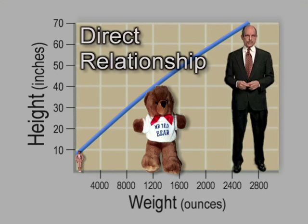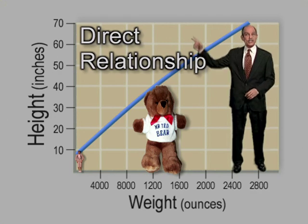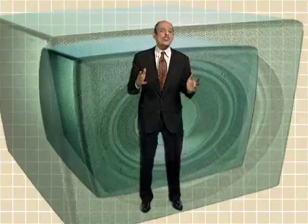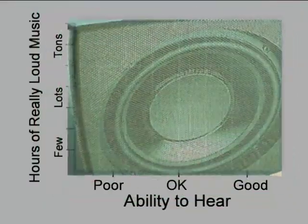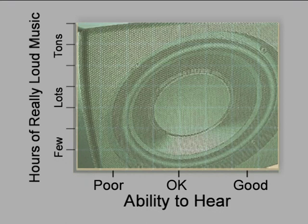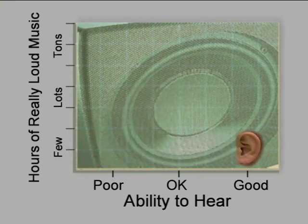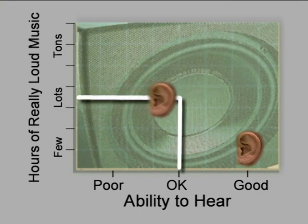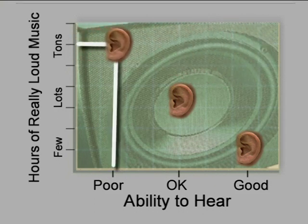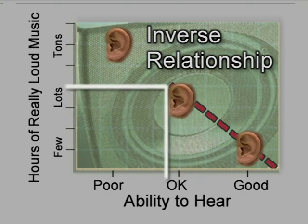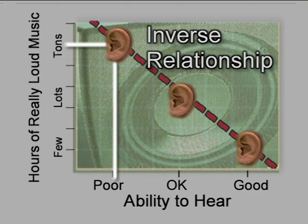This is what's called a direct relationship, since both variables change in the same direction — height increases, weight increases. But not every relationship is direct. Sometimes when one variable increases, the other decreases. The more hours of very loud music you're exposed to, research shows, the worse your hearing will be over time. Plotting it on a graph, you would have hours of loud music on the vertical axis and ability to hear on the horizontal. A few hours listening to super loud music: pretty good hearing. Lots of hours listening: no better than okay hearing. Tons of hours: poor hearing. So the variables on this graph move in opposite directions — as hours of loud music increase, ability to hear decreases. This is what's called an inverse relationship.